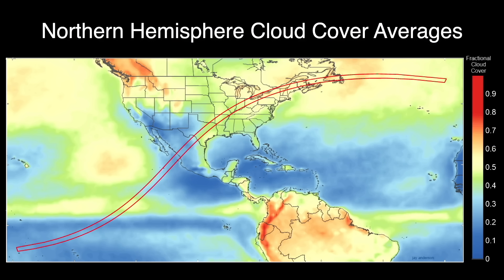On this map, the colors represent the average cloud cover for April 8th. Blue means normally clear skies. Green means a 50% chance for clouds. And red means normally clouded over for that day. The path of totality is also outlined in red.